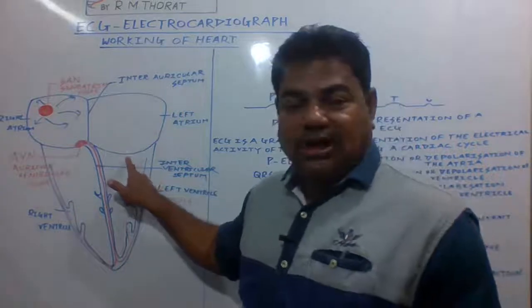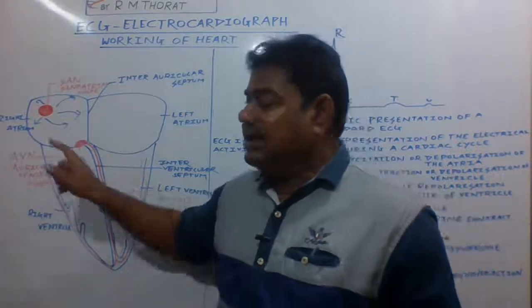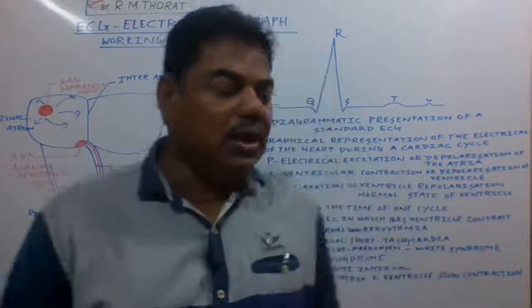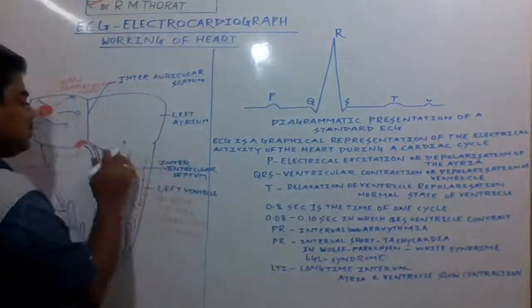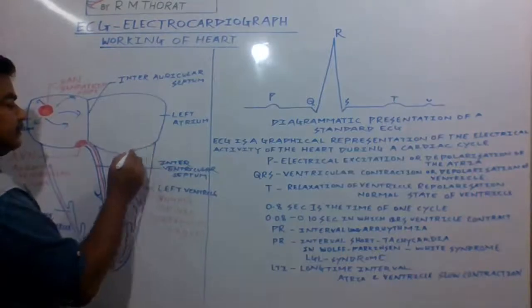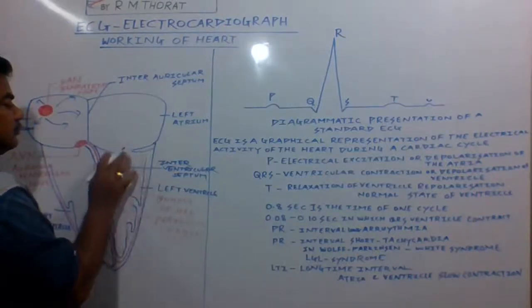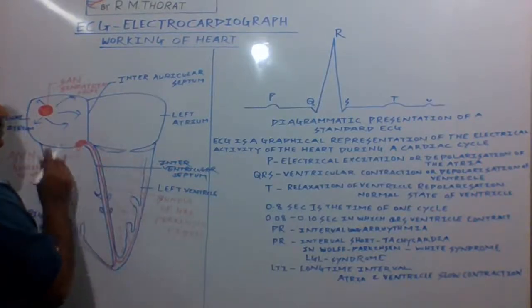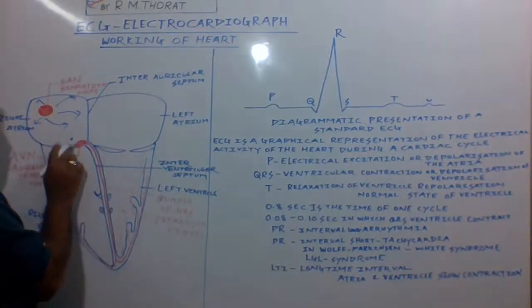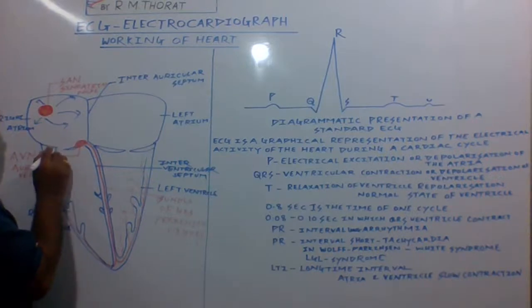Here the bicuspid wall is present and here is the tricuspid wall. This one is the bicuspid wall, and the wall on the other side is the tricuspid wall.